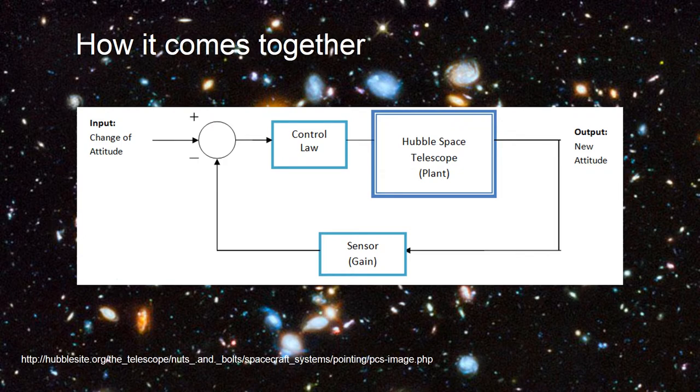So this is how it all works. Hubble gets an input to change its attitude or orientation. That message gets sent to the control law. That control law sends it to the actuators, where the actuators are the reaction wheels. The reaction wheels change the orientation of the plant. That new orientation is your output.